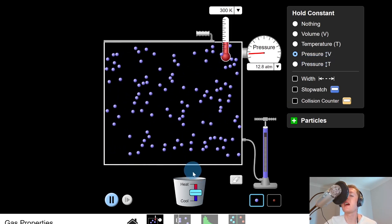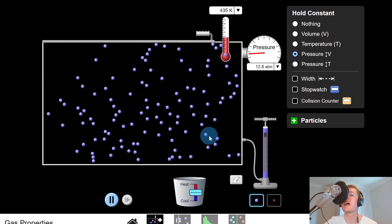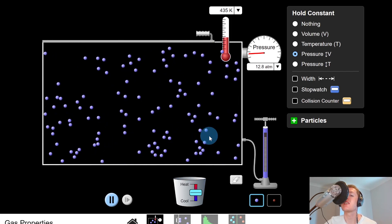So you'll notice that if I increase the temperature of my gas, then the box increases, i.e. the volume of my gas increases. And we can explain that in terms of the kinetic model.